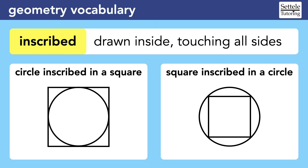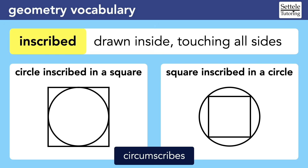I doubt the SAT would ever use the word circumscribes, but it basically means the opposite of inscribed. On the left, a square circumscribes a circle. On the right, a circle circumscribes a square. Again, I doubt you'd ever see the word circumscribes on the SAT, but there is a very good chance that you would see the word inscribed.